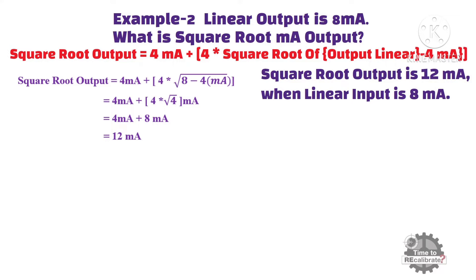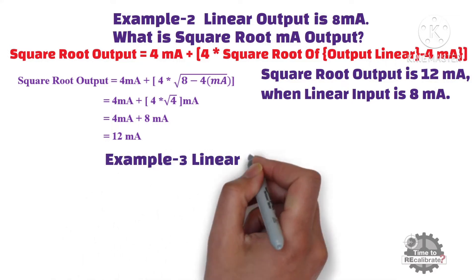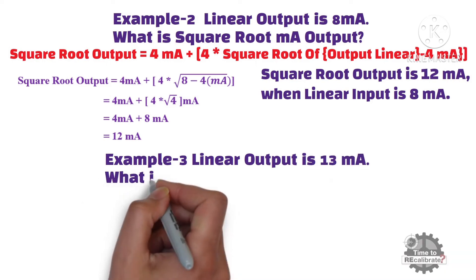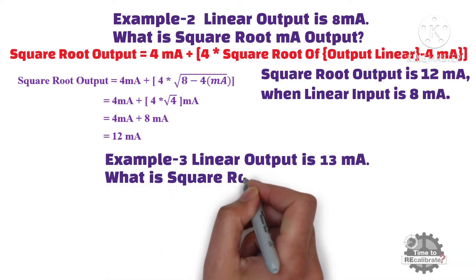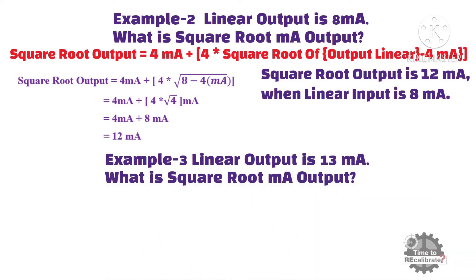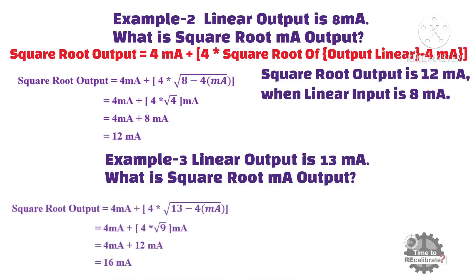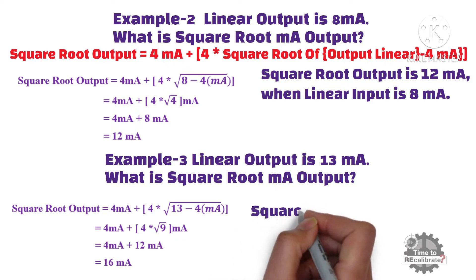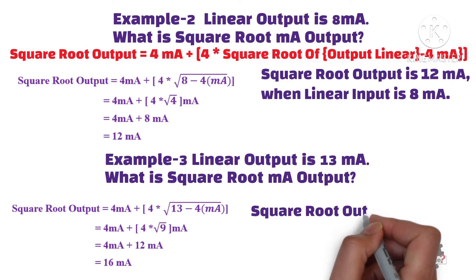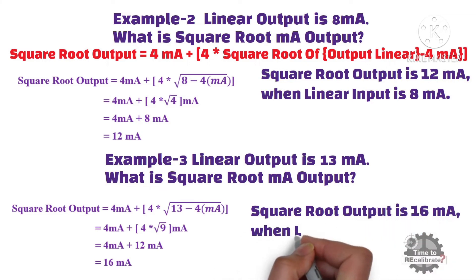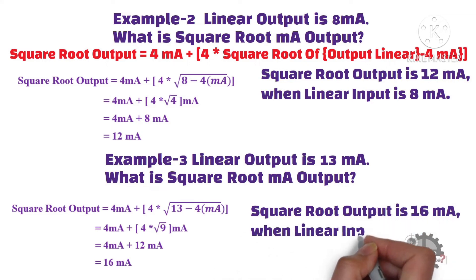Let's take a third example. If the linear output is 13 milliampere, what is the square root milliampere output? Put 13 milliampere into the equation and do the simple math calculation. It will give you 16 milliampere. So the square root output is 16 milliampere when the linear input is 13 milliampere.